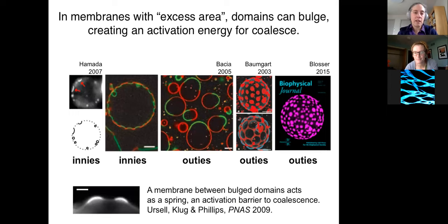That excess area makes it so that a membrane that's between two bulges, here's a bulge on the left and a bright bulge on the right, the membrane that is in between acts like a spring. As those two bulges are coming close to each other, the membrane in the middle acts like a spring and prevents those two domains from merging. In beautiful work by Tristan Ursell and Bill Klug and Rob Phillips.